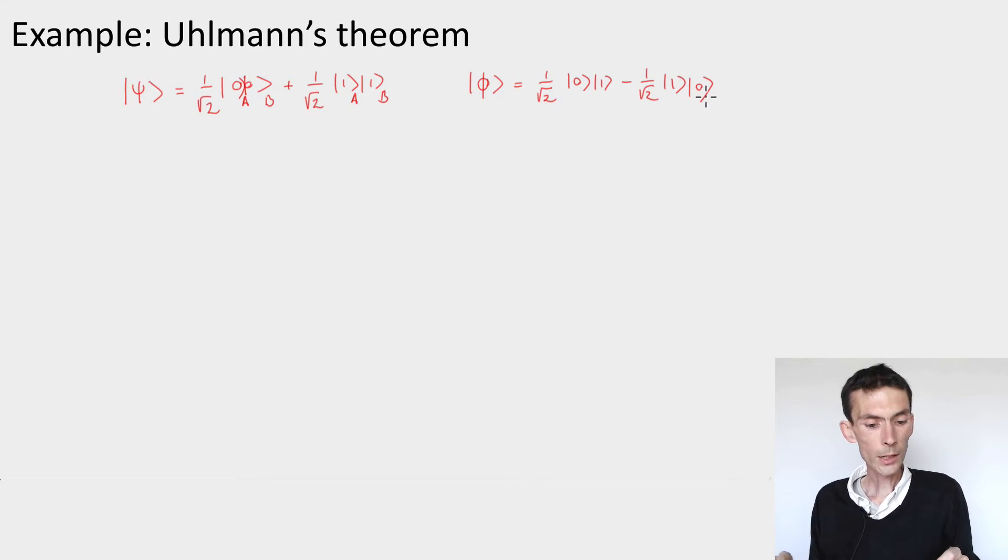These two states have the particularity that if I look at the reduced density matrix on A, I get the identity, and on B also totally mixed state, half of the identity. And the same for phi.